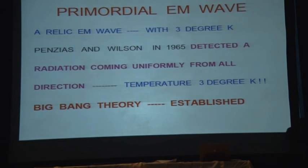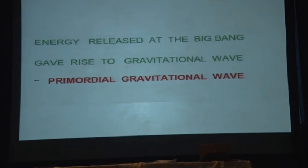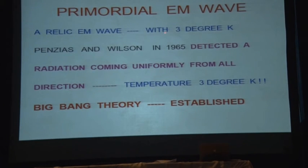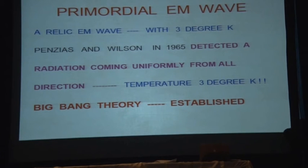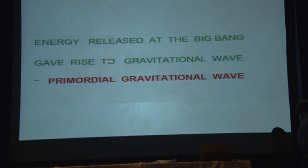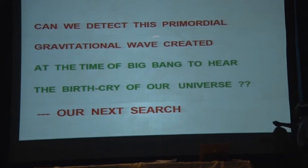That energy finally resulted in all the masses that you see — you, me, and everyone. At that time there was a heat wave emitted. That heat wave was approximately 3 degrees Kelvin temperature, still present today as a footprint of the electromagnetic wave from the Big Bang, found by two persons in 1965. They measured this primordial Big Bang electromagnetic wave and Big Bang theory was established. Our question is: the energy released at the Big Bang also gave rise to gravitational waves. Where is that primordial gravitational wave? Can we detect it — to hear the birth cry of our universe?